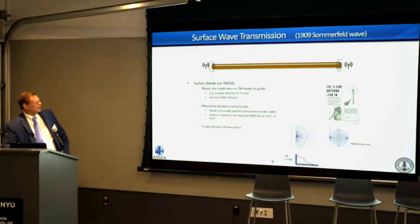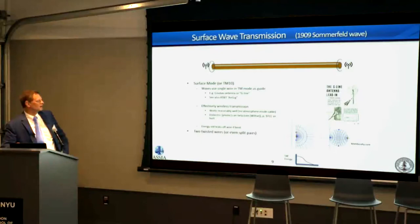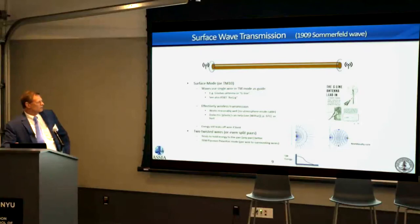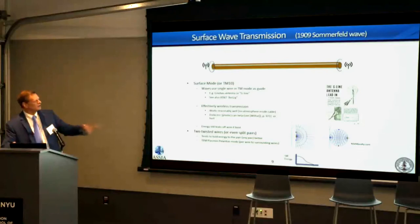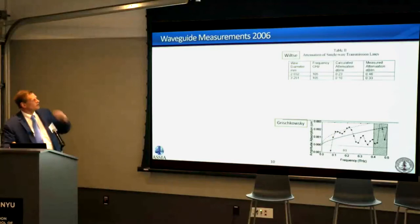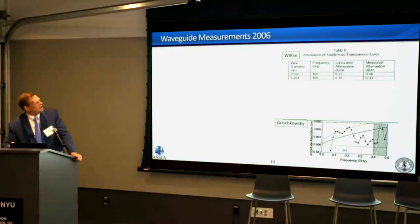We'll look at those modes and apply vectoring models that have been used successfully. There are also TEM modes — so-called plasmon polaritons — where charges in the copper itself support the wave. Some of these have been measured. Wiltsy measured a 2 mm diameter wire at 100 GHz and above, getting about 0.8 dB per meter attenuation in the 100 to 300 GHz band. Grishkowski's measurements on a 0.52 mm diameter wire show about 0.5 dB per meter — a single wire; a second wire nearby would presumably improve that.